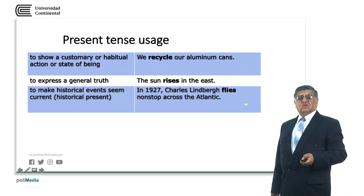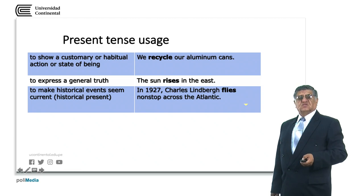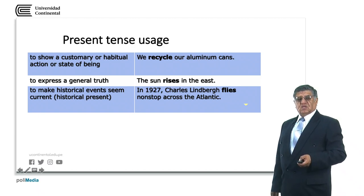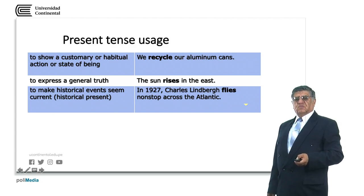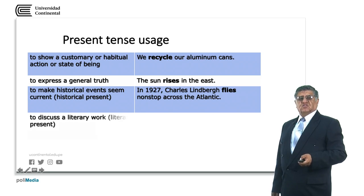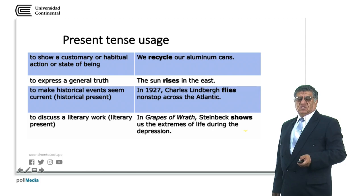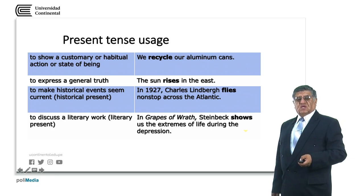The present tense is used to make historical events seem current — the historical present. For example: in 1927, Charles Lindbergh flies non-stop across the Atlantic. This is a particular form used in formal or academic English. It is also used to discuss a literary work: in Grapes of Wrath, Steinbeck shows us the extremes of life during the Depression. Grapes of Wrath was written long ago, but we can read it now — that is why we use shows.